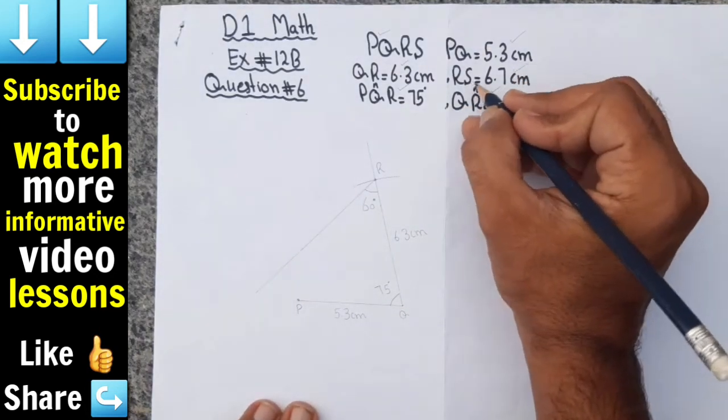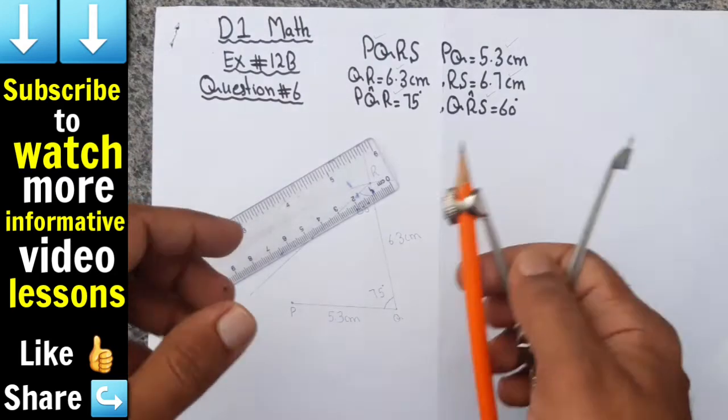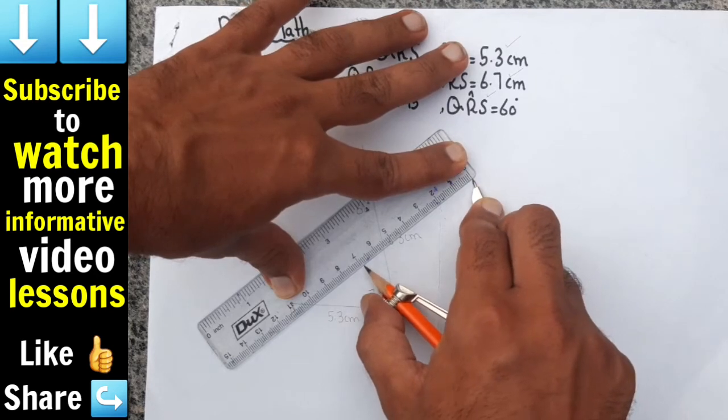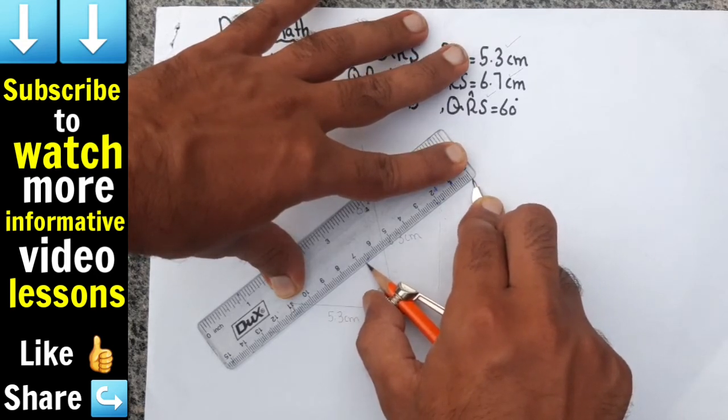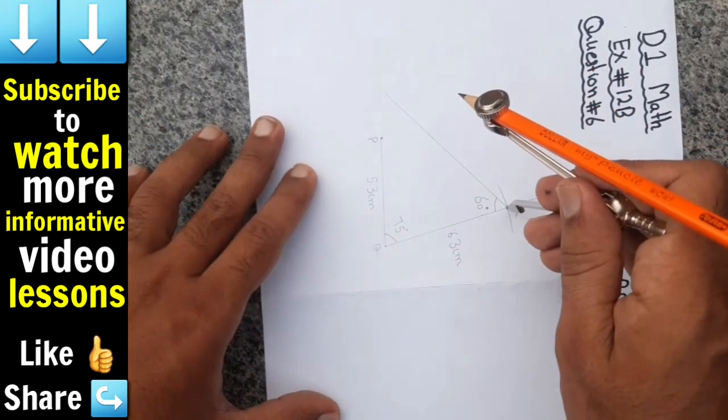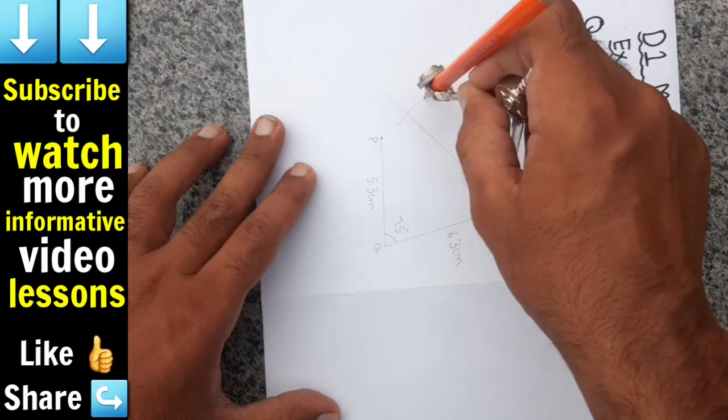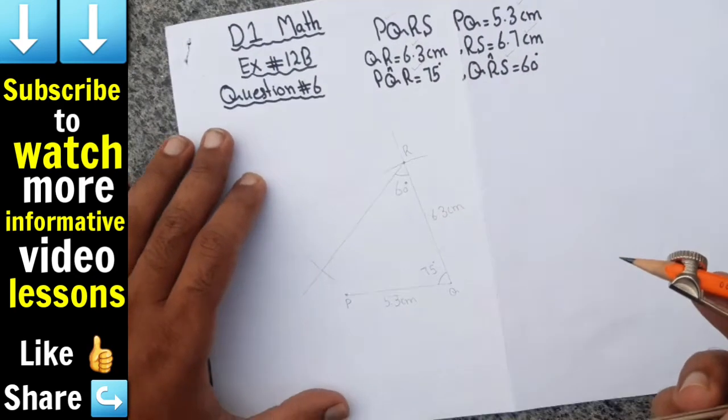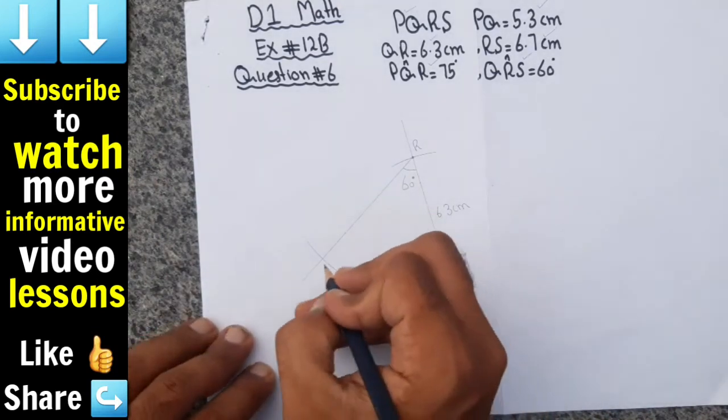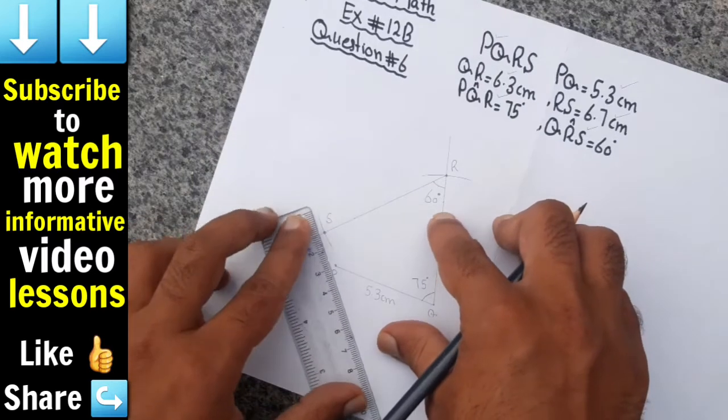Now we have drawn the 60 degree angle. This length is equal to 6.7 centimeters, so we have to open the compass for 6.7 centimeters. This is our point R and this is now point S.